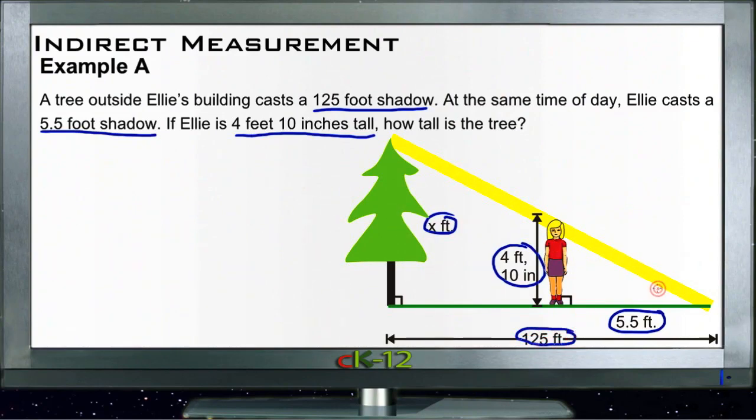Since Ellie and the tree both share the same base angle of a triangle and the same 90 degree angle between them and the ground, they both create similar triangles, so their sides will be in proportion.